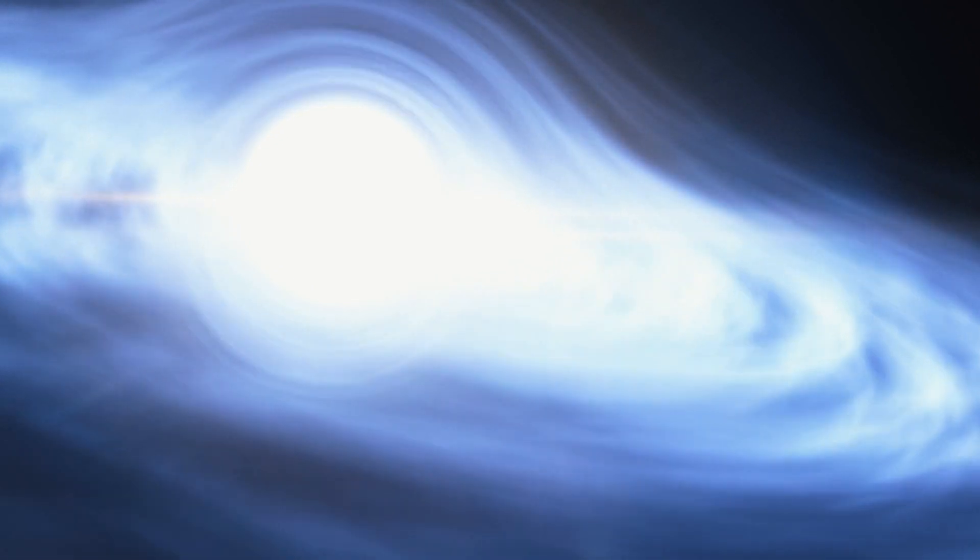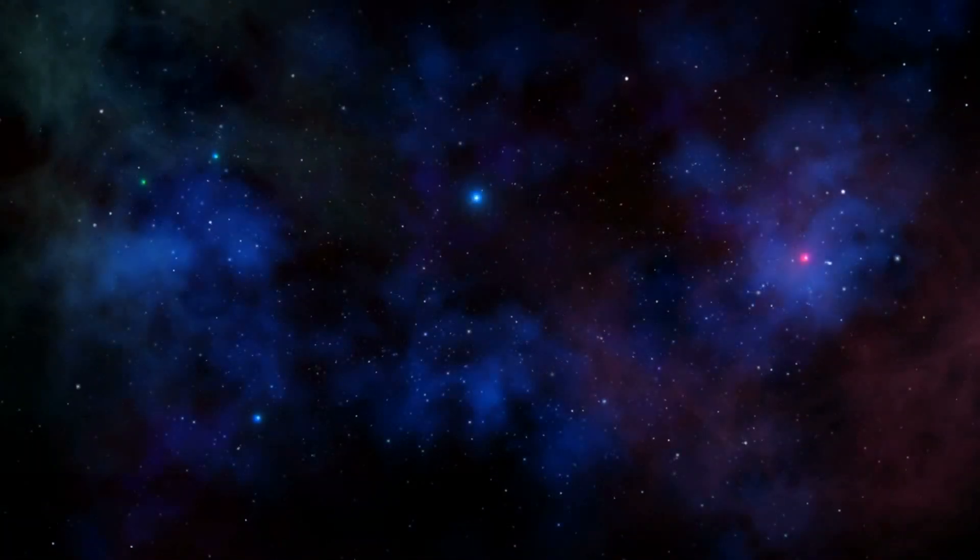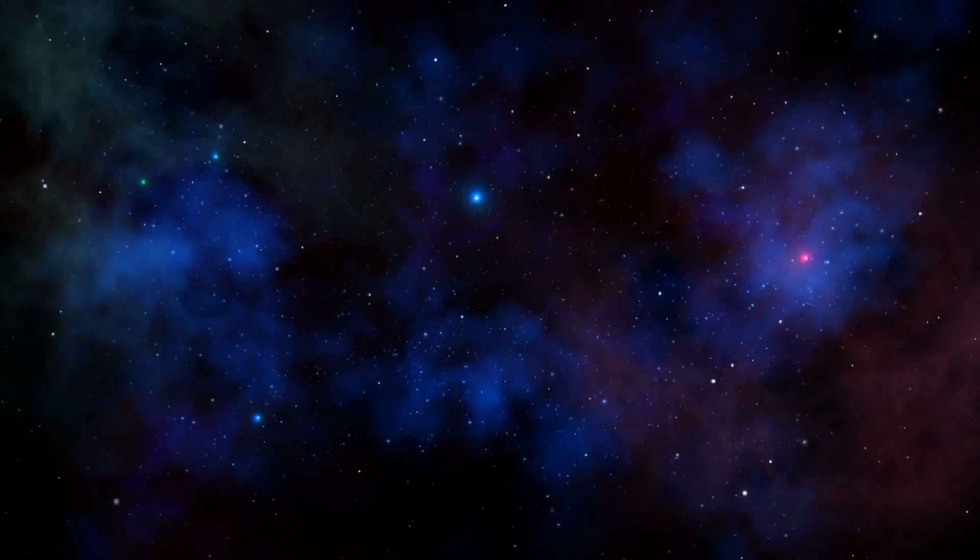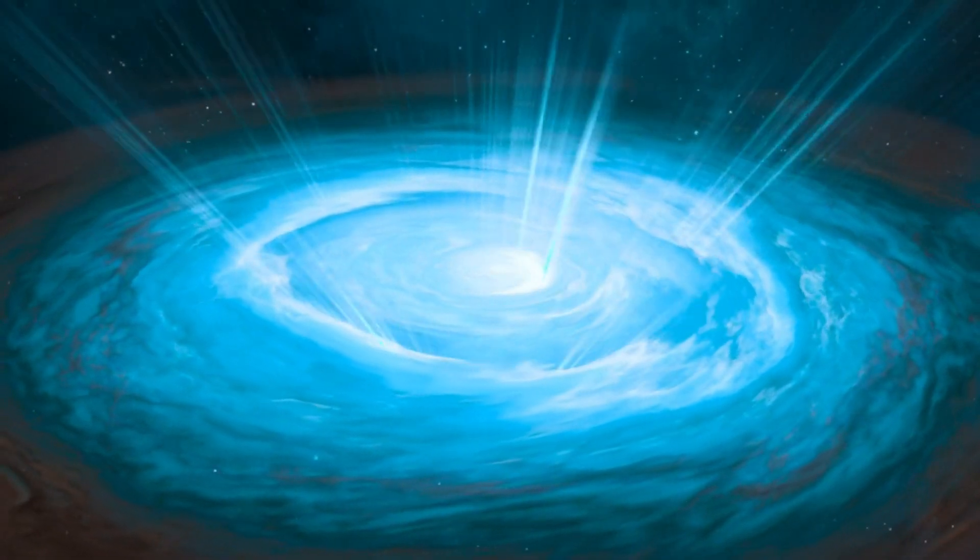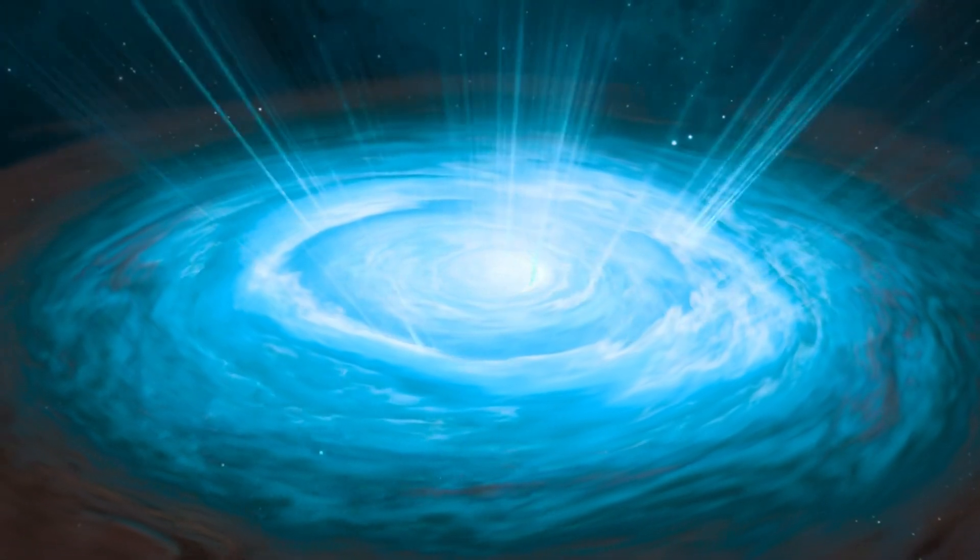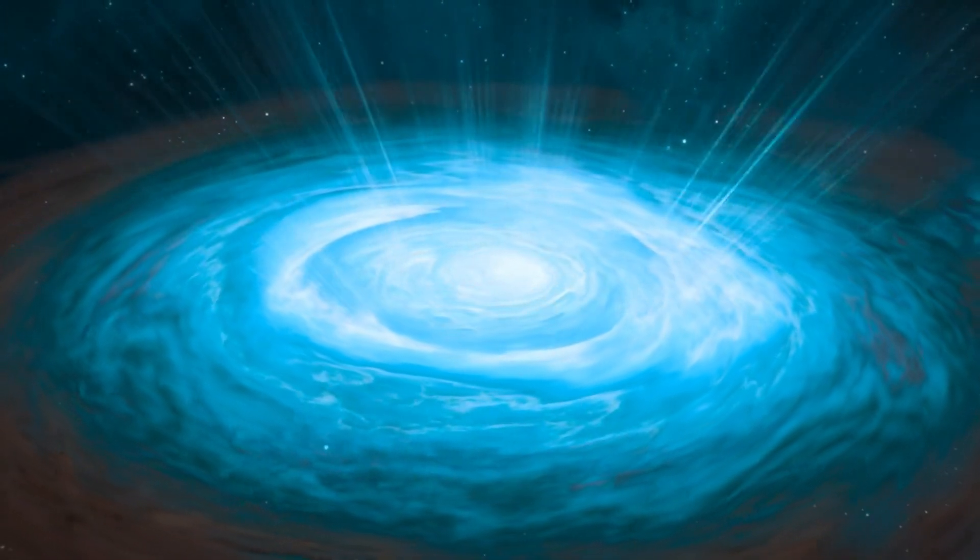This disk can get so hot from the gravitational energy that it emits X-rays and even jets of particles at nearly the speed of light. These jets can interact with surrounding gas clouds, compressing them enough to kickstart the formation of new stars. So in a way, black holes in the Pearl's Field would be acting as celestial matchmakers, aiding in the birth of new stars.